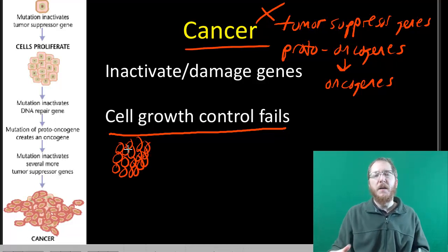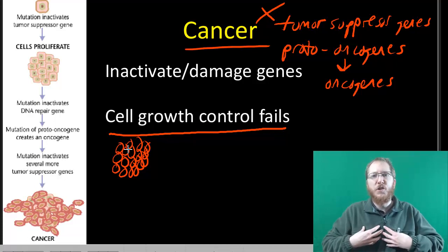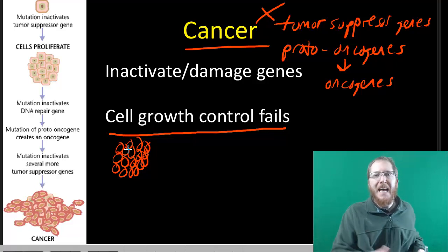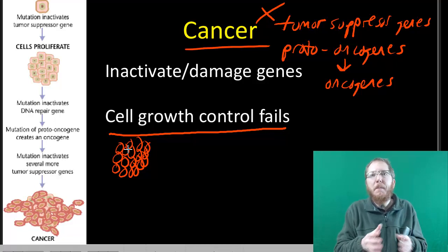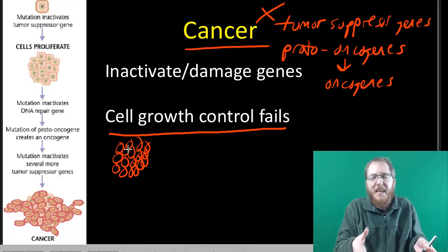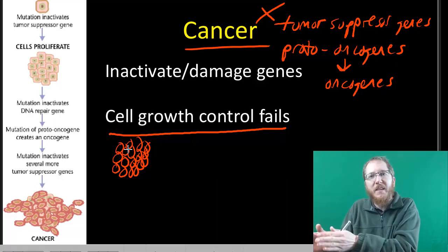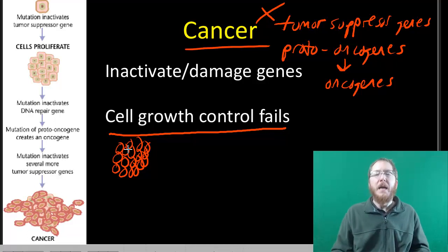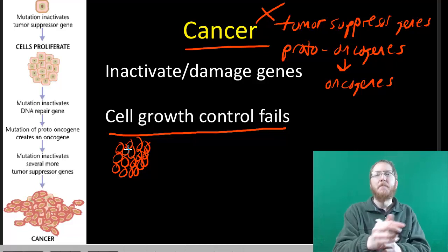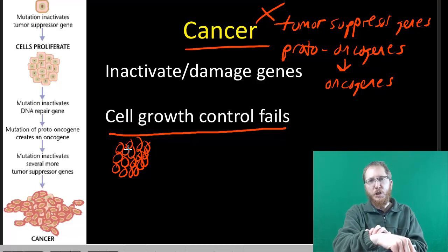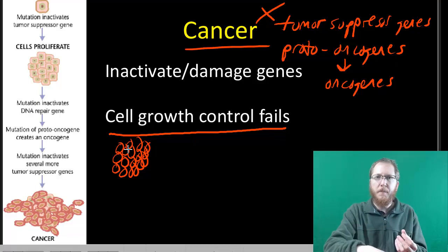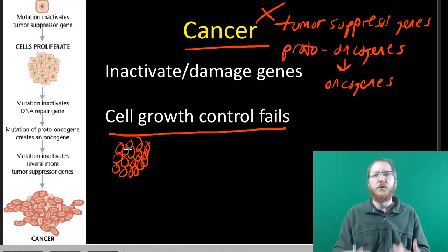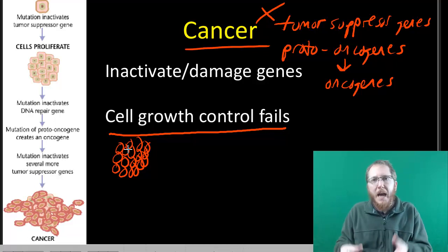Eventually cancer can kill you if it gets into a vital organ, crowding the functional cells. Imagine trying to work in a room that keeps filling with people who aren't helping — just taking up space. That's what cancer cells do. If there are enough of them, the organ fails and that can kill the person. Crucially, cancer can also migrate within the body, which is what makes it so dangerous. Skin cancer or colon cancer alone could potentially be removed surgically if it stayed localized.